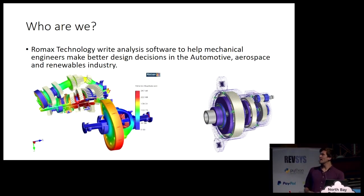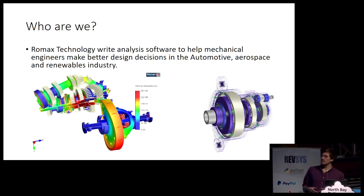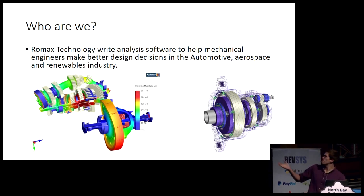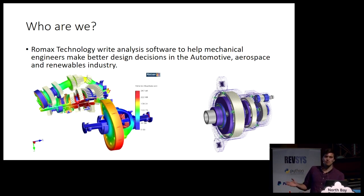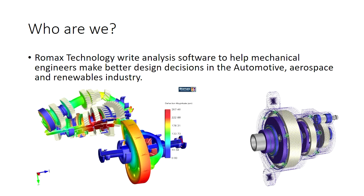So, Romex. We write analysis software for mechanical engineers to help make better decisions when they design automotive products — like cars, aerospace things — and in the renewable energy sector, like wind turbines. We model all the phenomena that goes in and hopefully help make some better decisions. On the left, you've got a very poorly-looking gearbox which is bending, and hopefully we can help the engineers understand why. On the right, I have no idea what this picture is — I just got it off our website and it looked pretty good.